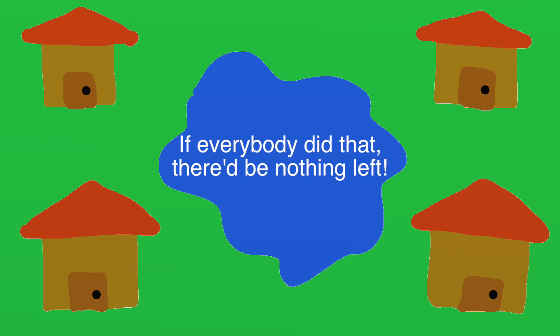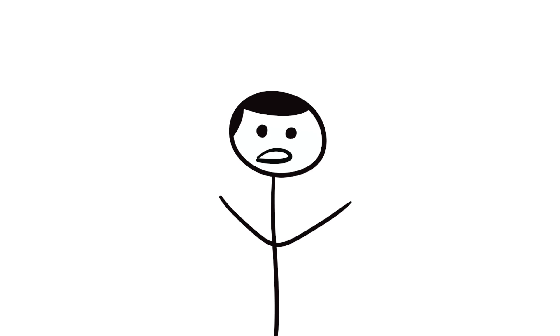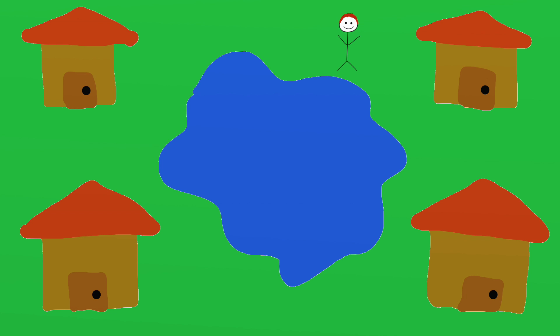It's the epitome of the phrase, if everybody did that, there'd be nothing left. In order to fix a situation like this, one might look to laws and regulations to change people's incentives. For example, if someone owned the pond and allowed people to fish in it, but required everyone to pay one dollar for every fish they caught,